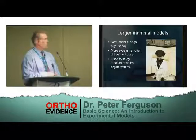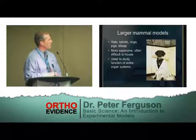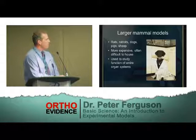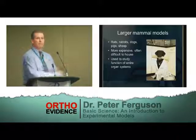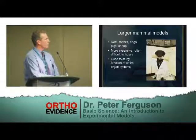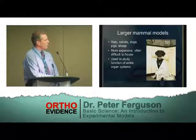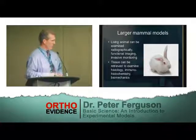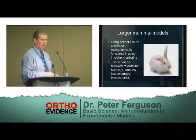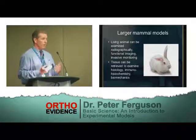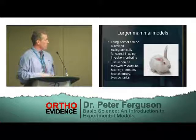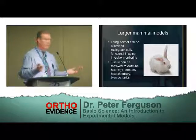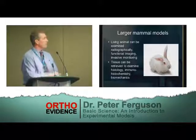Larger mammal models — rats, dogs, pigs, sheep — if you're going to use these, you've got to be prepared: they're very expensive, often difficult to house, and you really have to check what your animal colony can accommodate. The advantage is that you can study entire organ systems quite easily. With a living animal, you can look at radiographic results, do functional imaging, PET scans, functional MRI, and some invasive monitoring. After sacrifice, you can look at histology, immunohistochemistry, and biomechanics — if you've done some intervention to look at fracture healing, there are all kinds of things you can examine in these larger models.